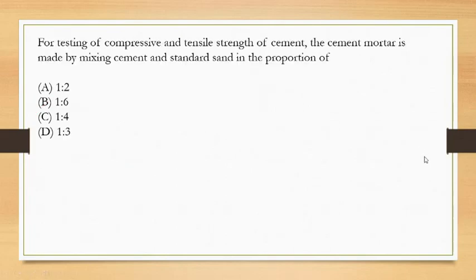Next question: for testing of compressive and tensile strength of cement, the cement mortar is made by mixing cement and standard sand in the proportion of? For performing these tests, we make cement mortar, which is the mixture of cement, sand, and water. We have to use it in a particular ratio, and that ratio is option D, 1:3.